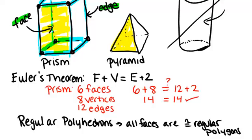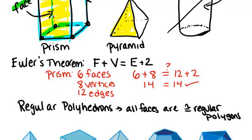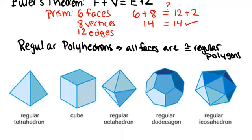There are five different regular polyhedrons, and that's it. They're called the platonic solids because Plato discovered them a long time ago. So another name for the regular polyhedrons are the platonic solids.